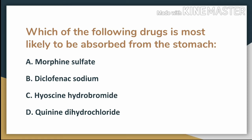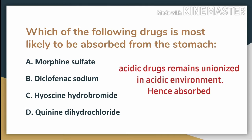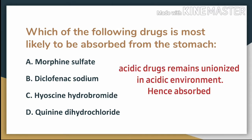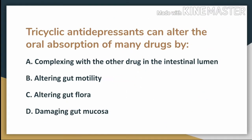The answer here is diclofenac sodium. From the principle of pharmacokinetics, we know that an acidic drug will be unionized in an acidic environment and will be absorbed in unionized form. So an acidic drug will be absorbed from an acidic environment. Diclofenac sodium is the only acidic drug given in the options, so the answer is B.